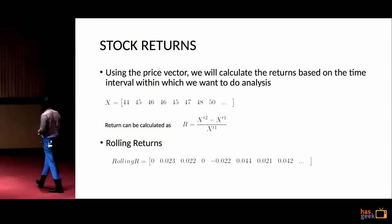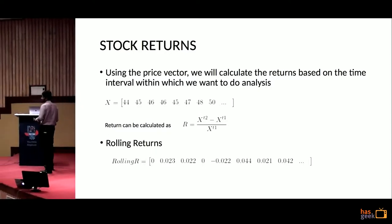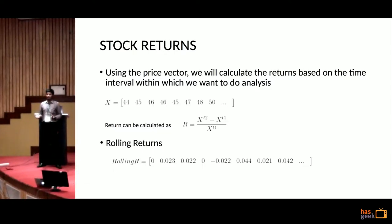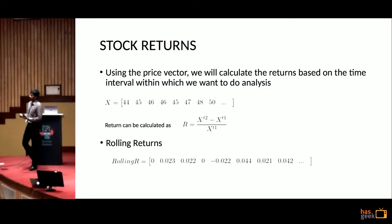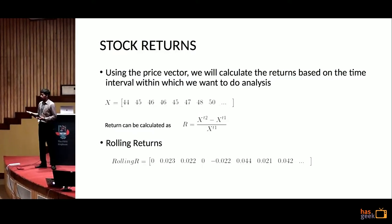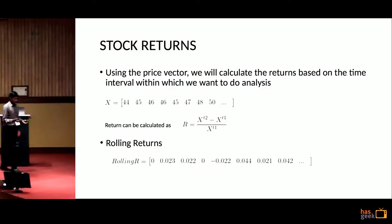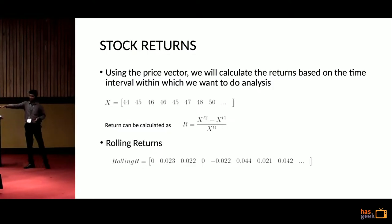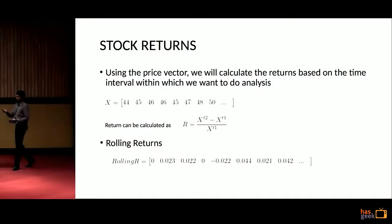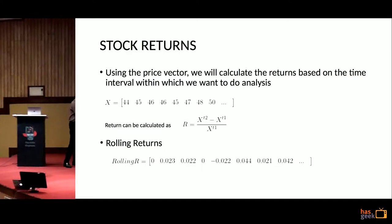Stock returns is nothing but the amount of profitability you can get from a particular stock. If yesterday the price was 10 and today the price is 11, the profitability is (11 - 10) / 10, so 10%. If I do this calculation for 10 days, what I get is the one-day return rolled out to 10 days. That is what we get as rolling returns.